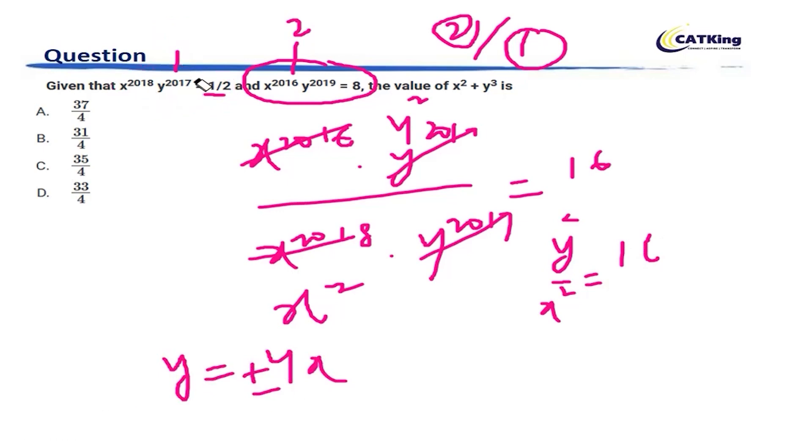Can you tell me why? Can you all pause the video and think why we should take y as plus 4x? The reason is very, very simple. x to the power 2018 is a perfect square. It will be a positive number. On the right hand side, you have a positive number. So, therefore, y should be a positive number so that this condition is satisfied. Hence, I should take y as plus 4x.